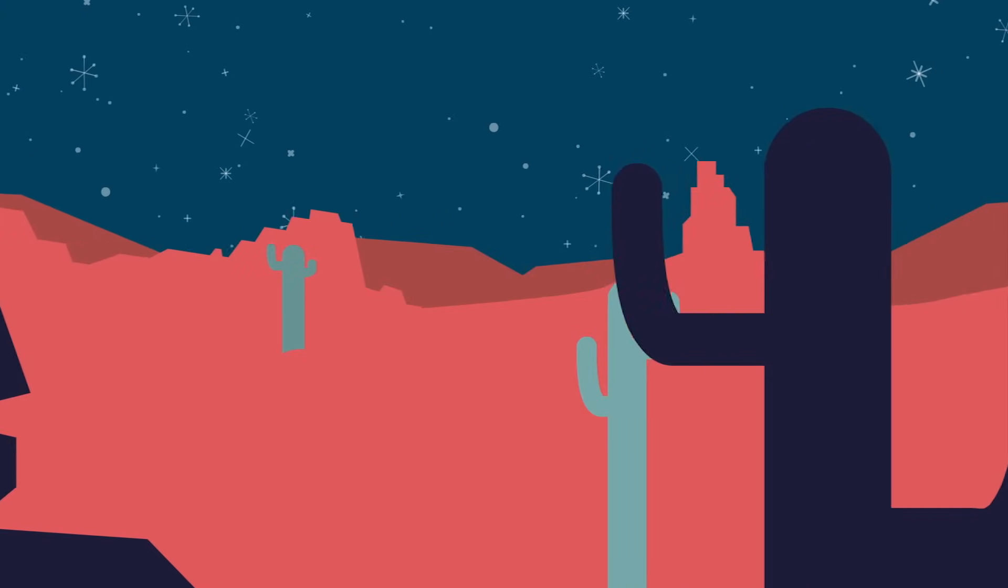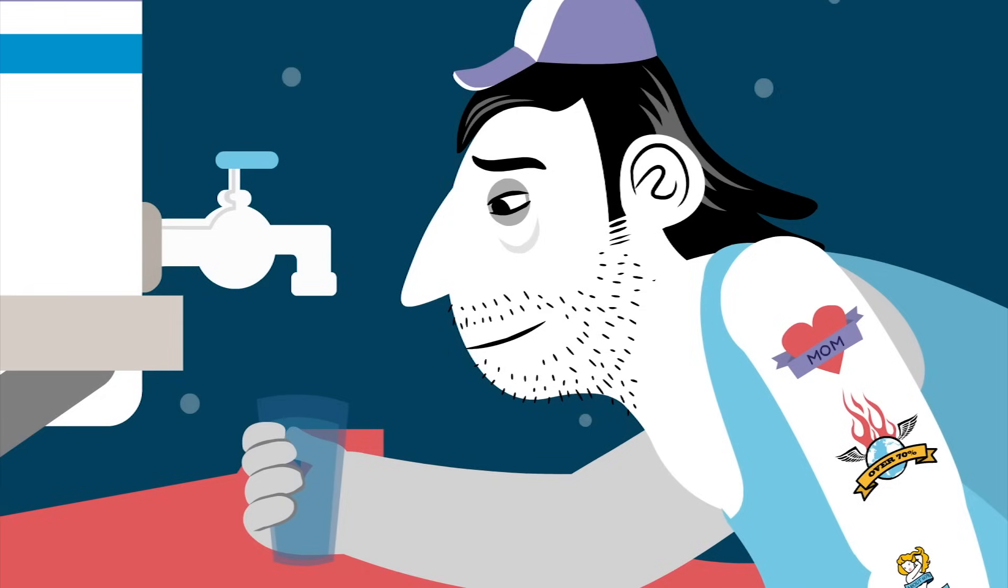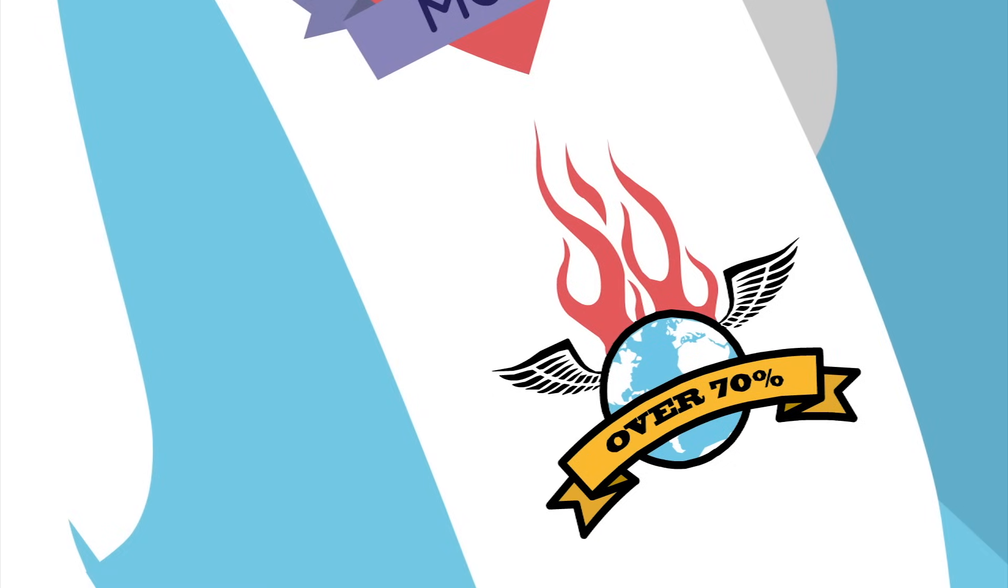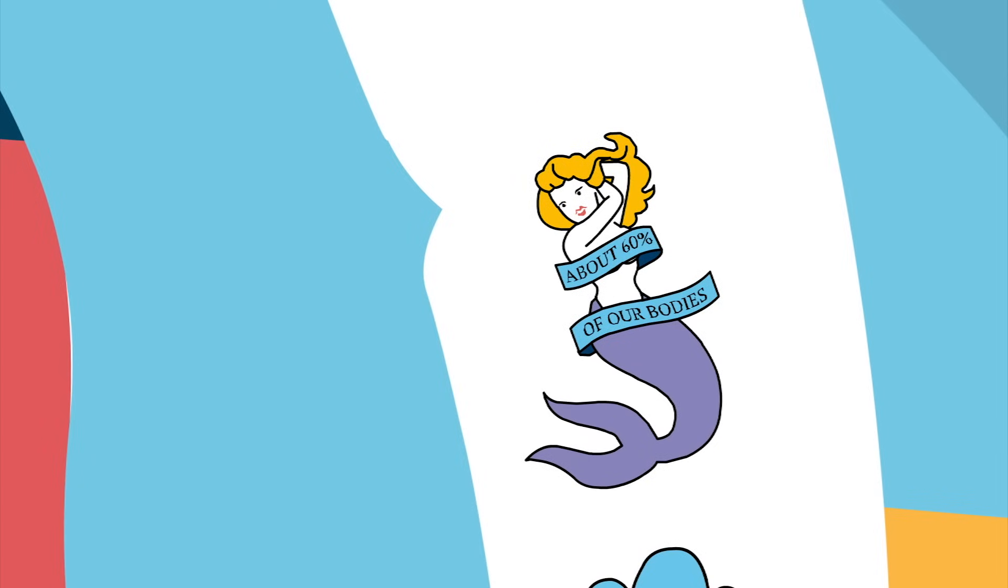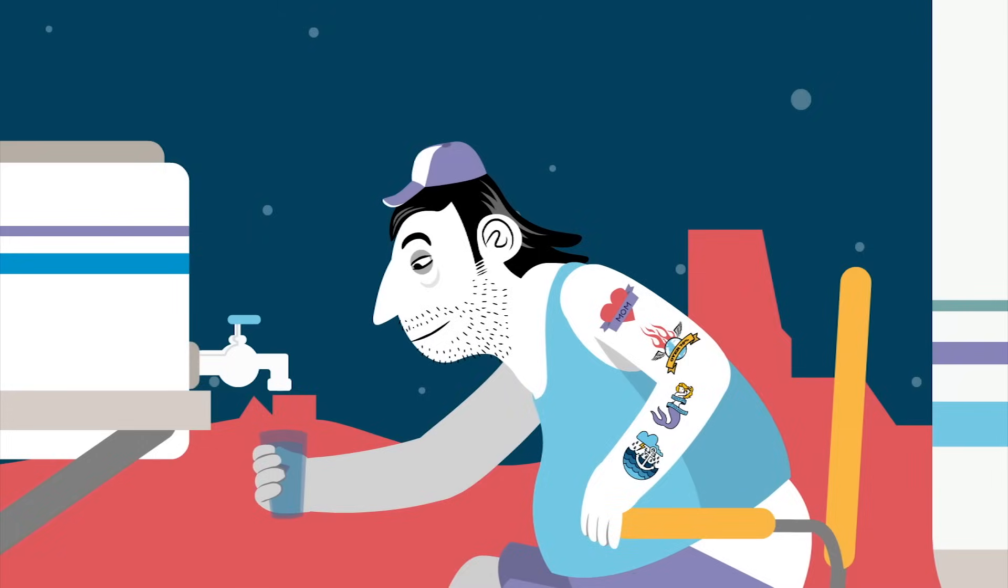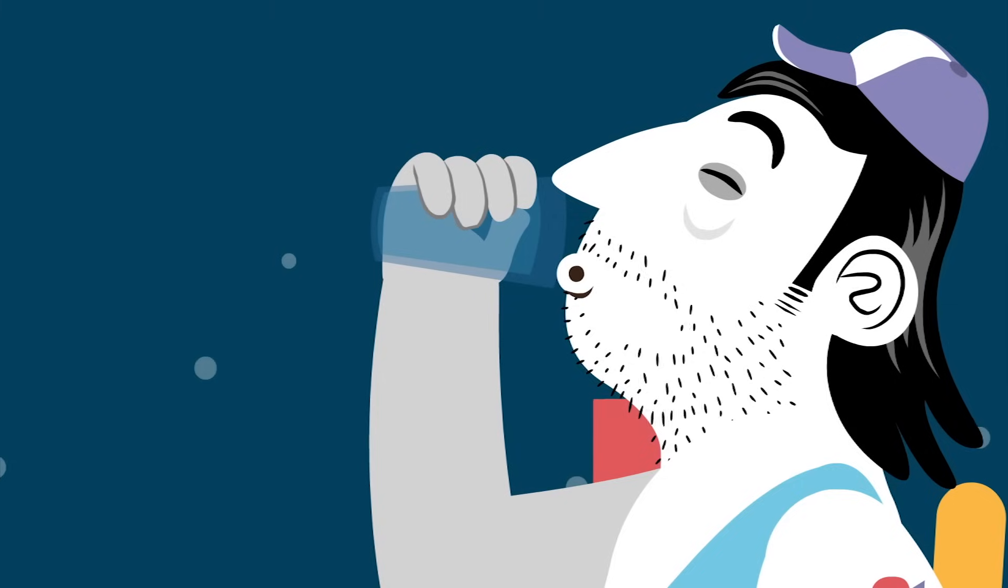It has no taste, color, or smell, and we often look right through it. It covers over 70% of the earth, cycling from the oceans and rivers to the clouds and back again. It even makes up about 60% of our bodies. With all this water around and inside us, it's easy to take its presence for granted.